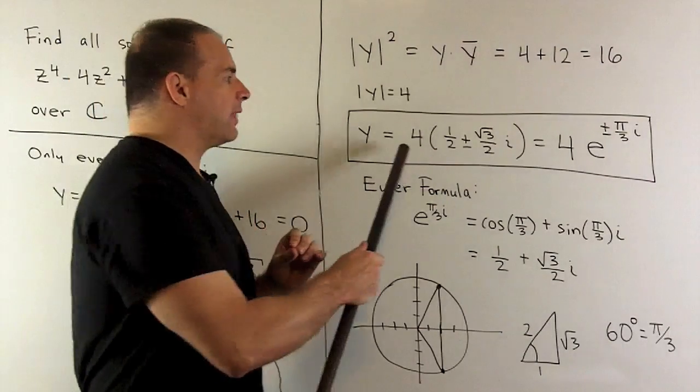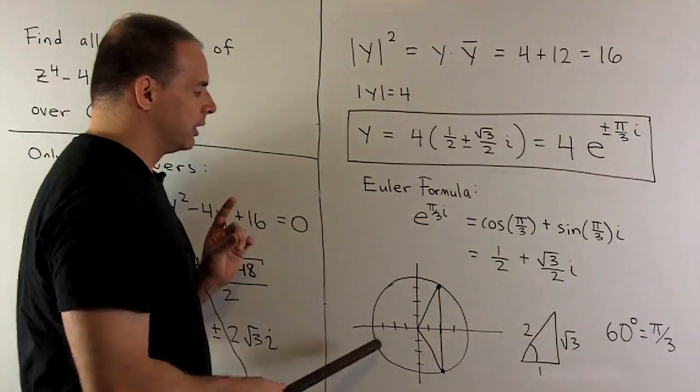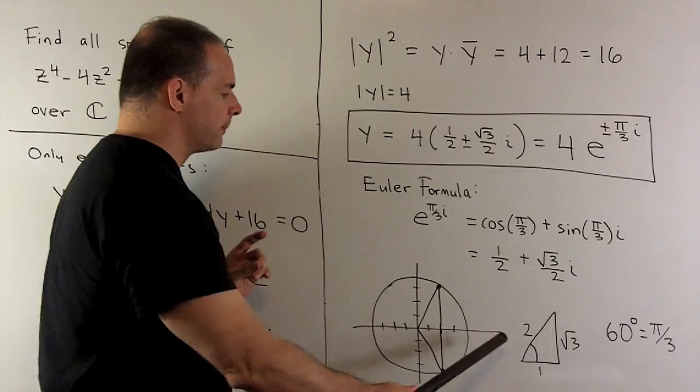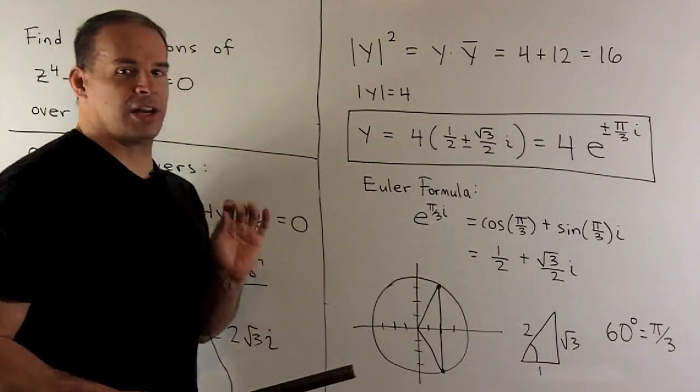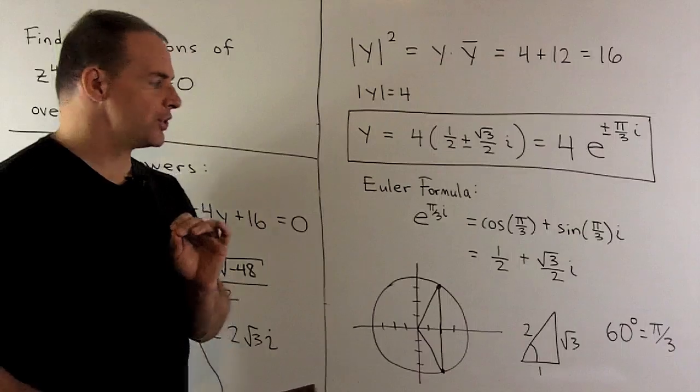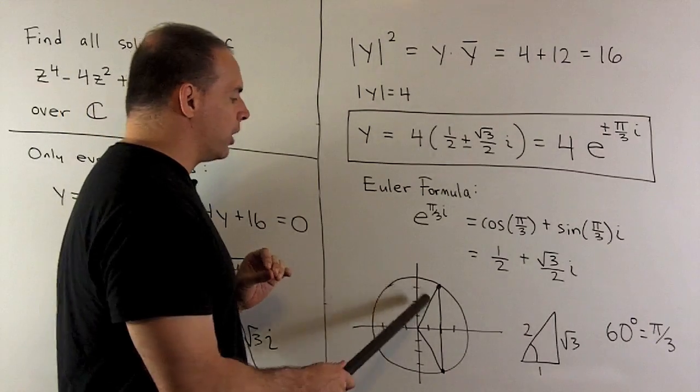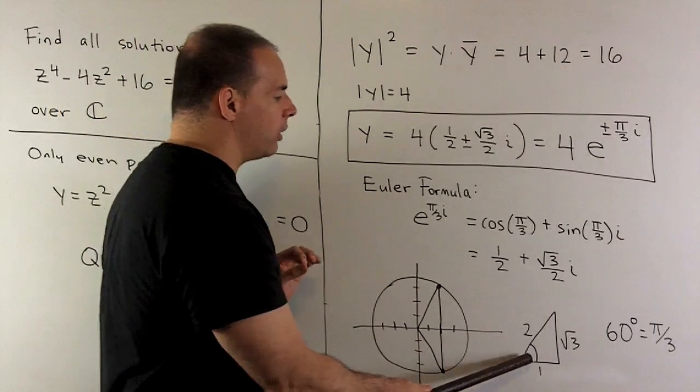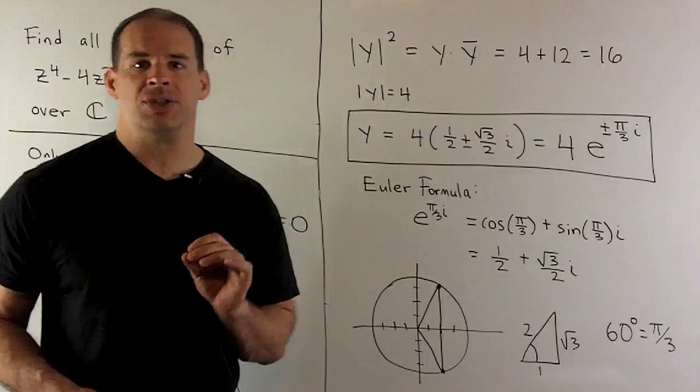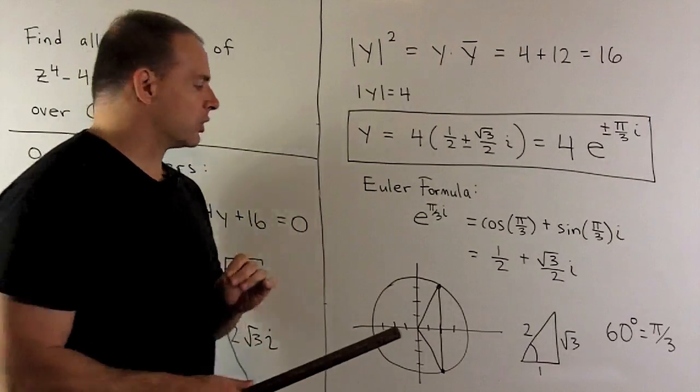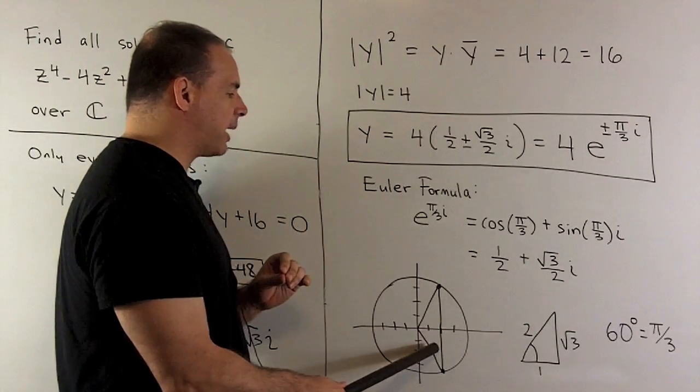Now, if we plot these in the complex plane, we have our picture like this. The triangle here is a 30, 60, 90 triangle. If we check the proportions, we note the angle that we're interested in is the large angle. So it's going to be 60 degrees or pi-thirds. I'm looking at pi-thirds here, minus pi-thirds here.